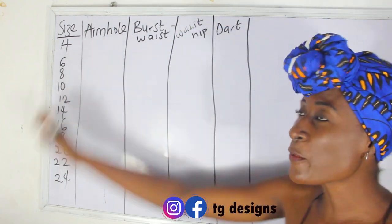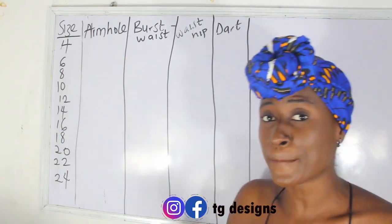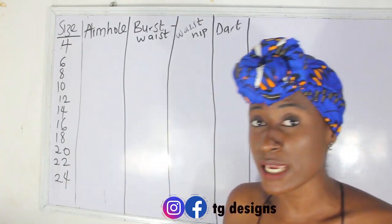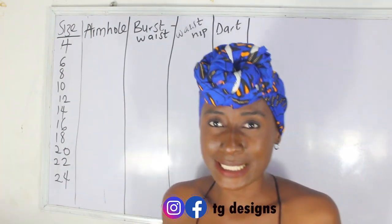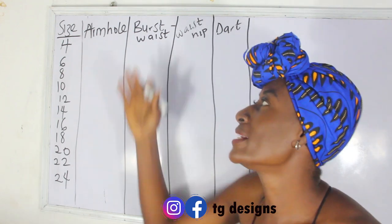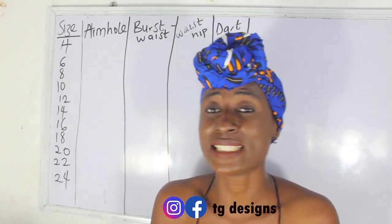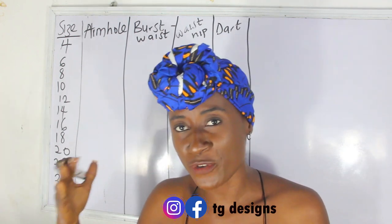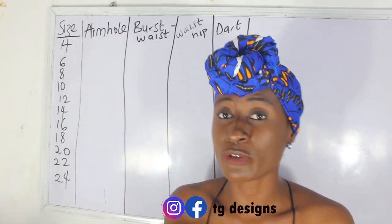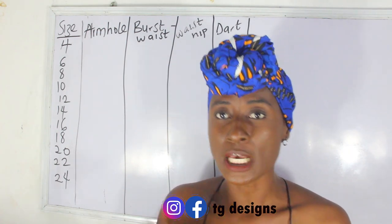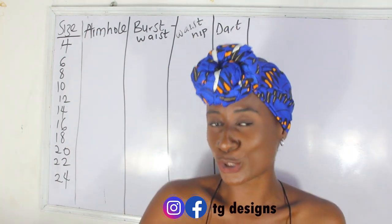So now in this video we have our armhole measurements, bust to waist, waist to hip, and our darts. In order to even understand the armhole measurements we're dealing with, you need to watch the previous video so you know that, for example, for a bust measurement of size 4 which is 34 inches, the armhole should be a corresponding value.